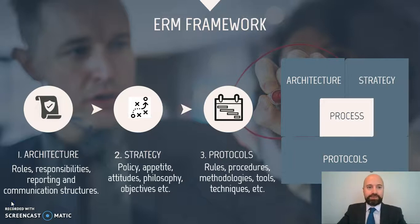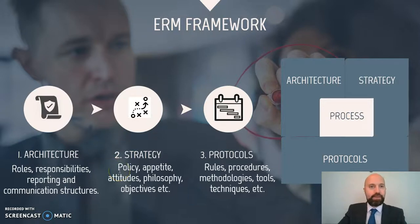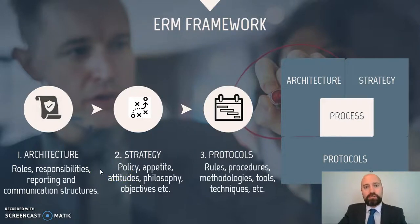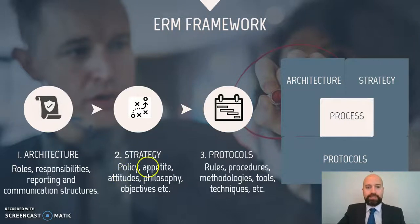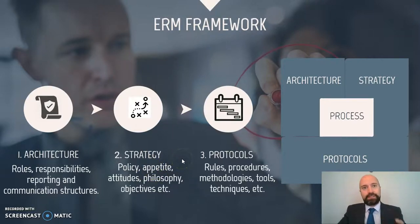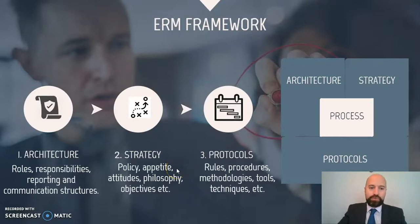The risk management architecture contains details on the roles and responsibilities related to risk management, but also on the reporting and communication structure. The strategy contains some of the key documents in every enterprise risk management framework, the most important central one being the risk management policy. This document shows the organizational commitment towards risk management and also the risk management objectives and accountabilities of the organization. Another central document is the risk management appetite — we will come back to this concept later. More concepts related to risk management would be the attitude, the philosophy, objective, etc.